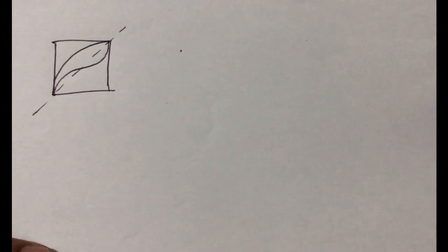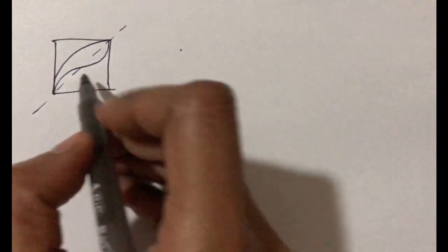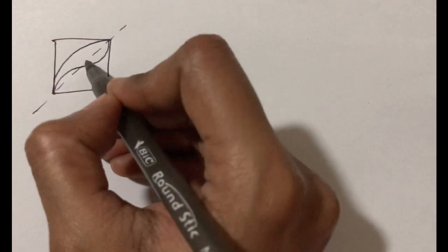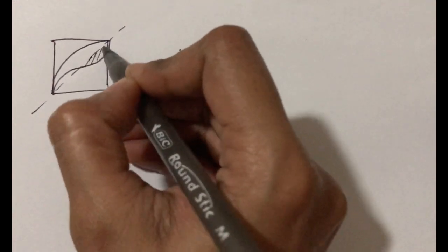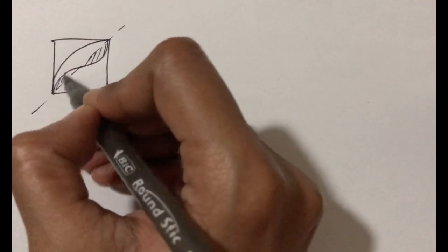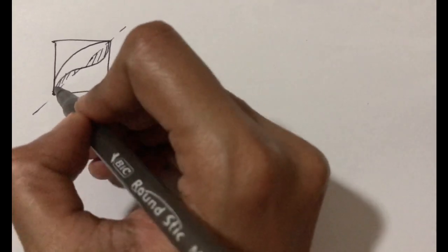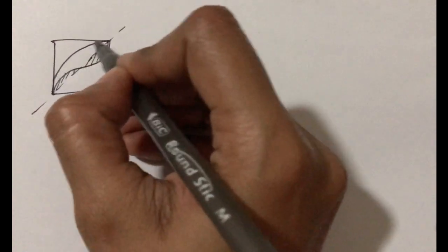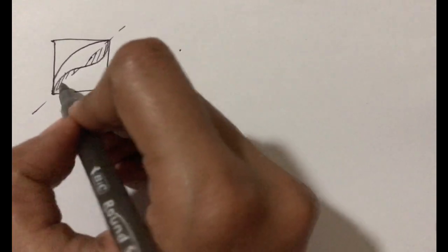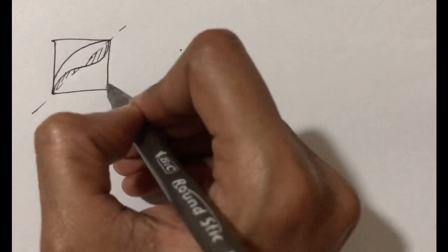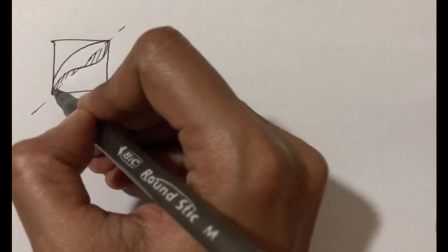First we look at one fourth of the quadrant. In this quadrant we see that this section is equal to this section, which means the area of this shaded portion is nothing but one fourth of the quarter circle minus this triangle.